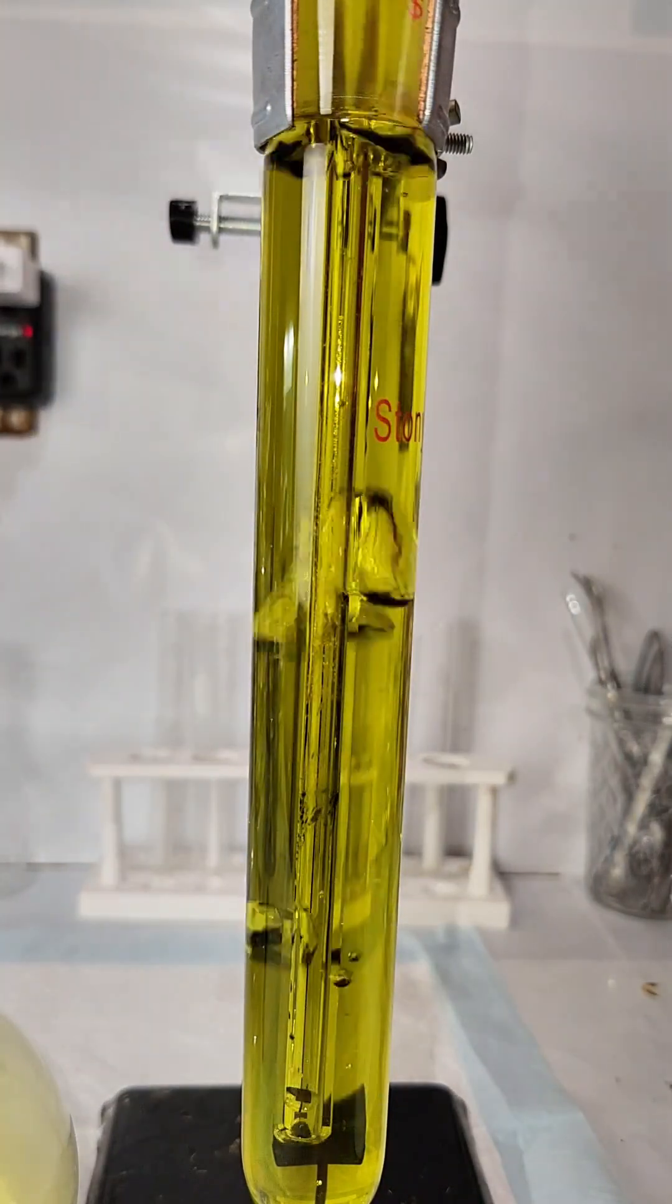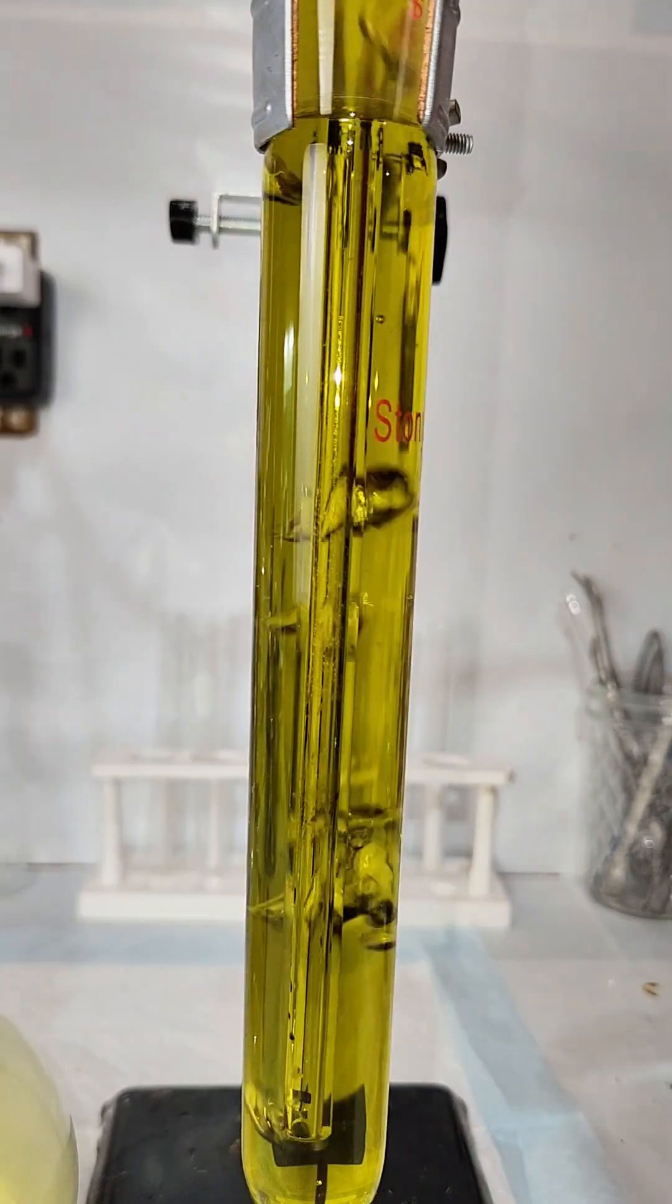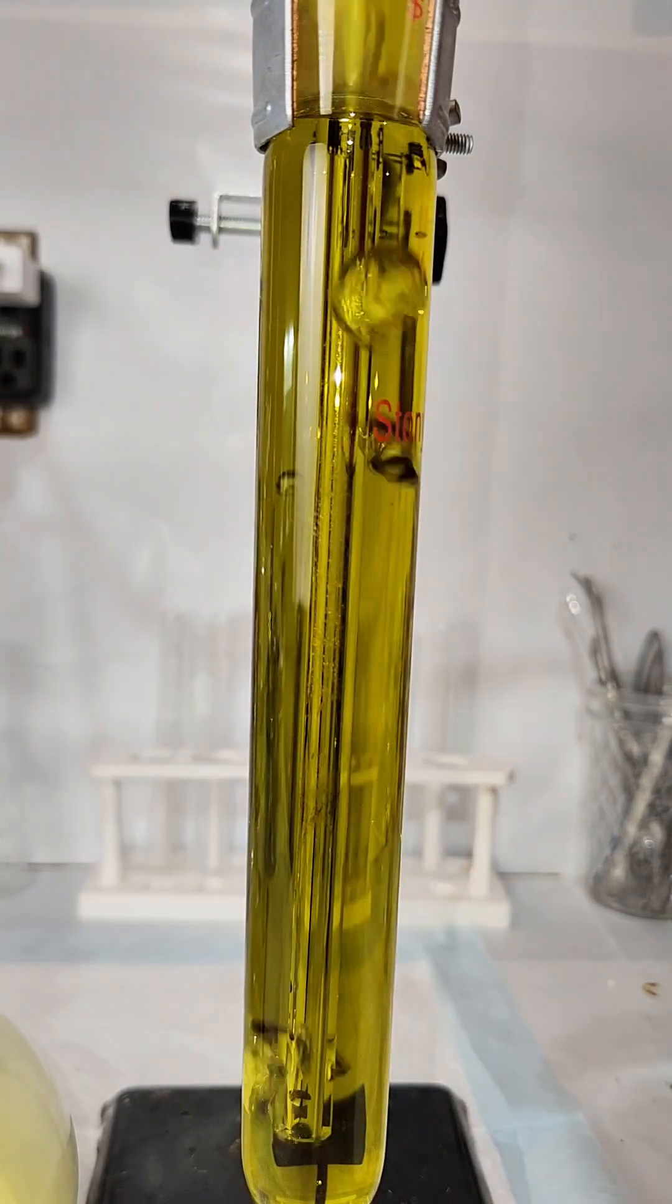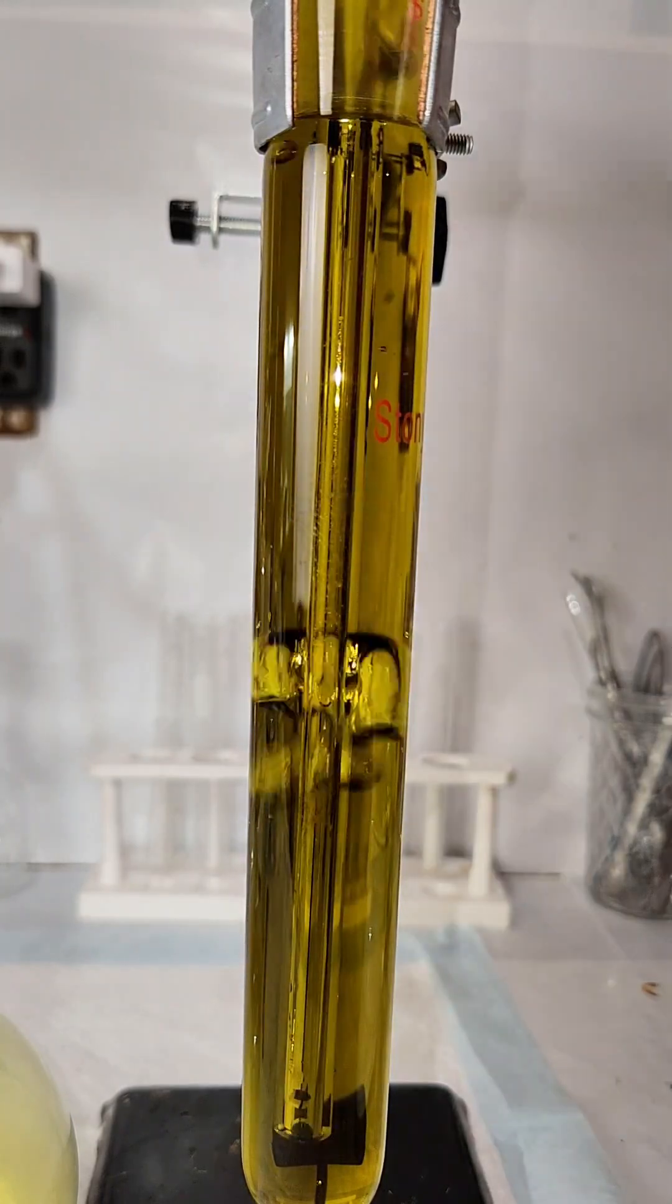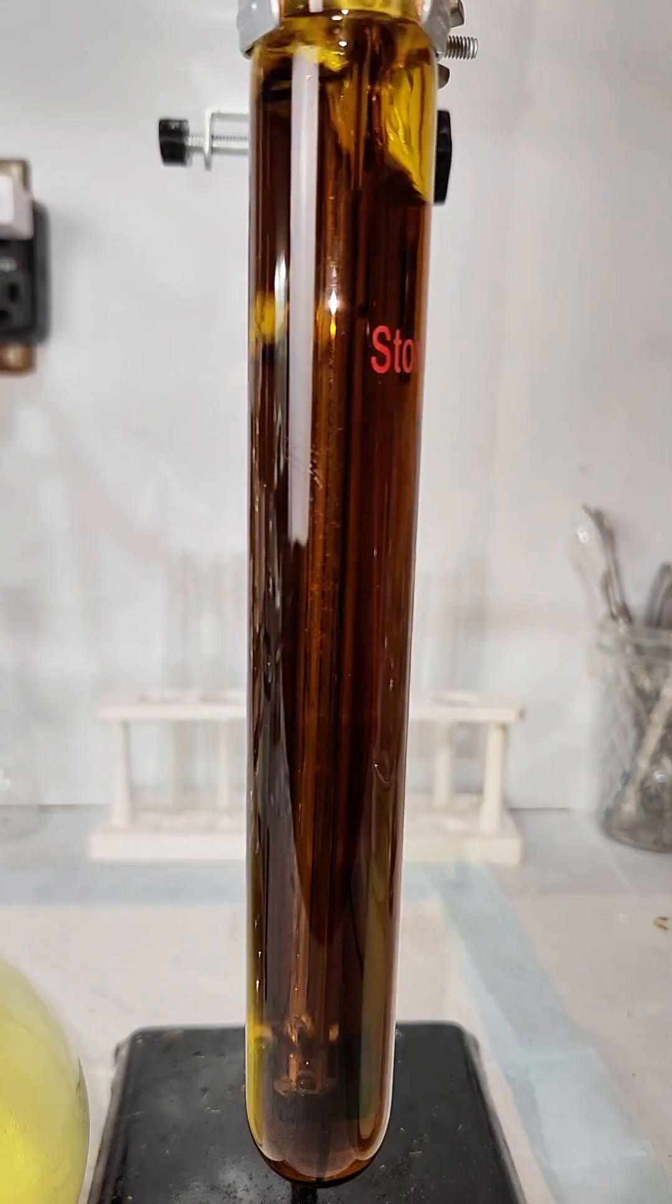Eventually, it'll change from this pale yellow color to a deep red, and it used to be named after that. Specifically, ferrocyanide was referred to as yellow prussate, while potassium ferricyanide was referred to as red prussate.